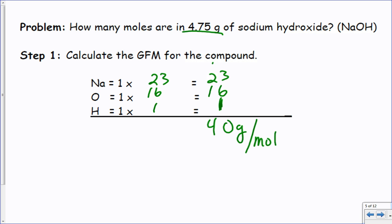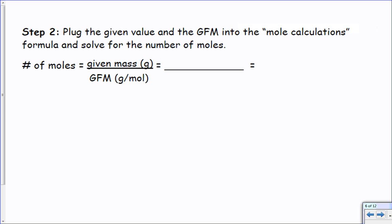Now plug the given value and the gram formula mass into the mole calculation formula. It gave me 4.75 grams. I'm going to divide that by 40 grams per mole. The grams are going to cancel and I'm gonna be left in moles. I just gotta plug it in my calculator now.